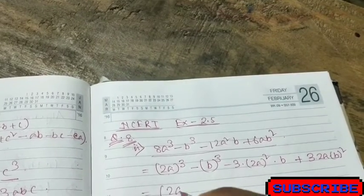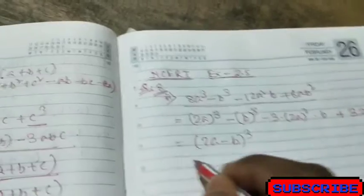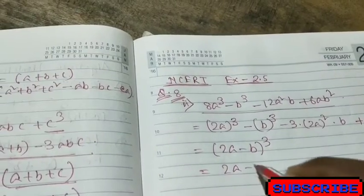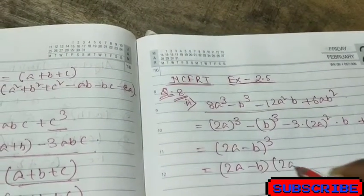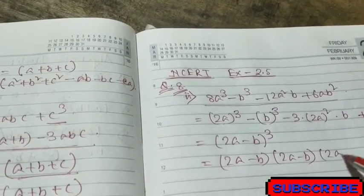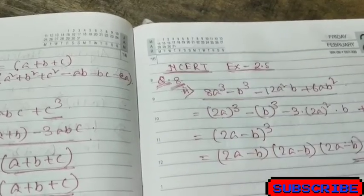It becomes 2a minus b whole cube. So this means 2a minus b into 2a minus b into 2a minus b. So this is the final form.